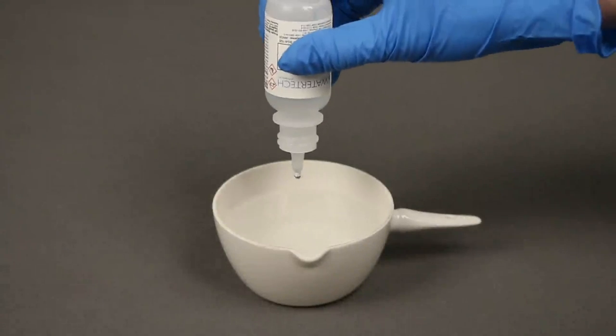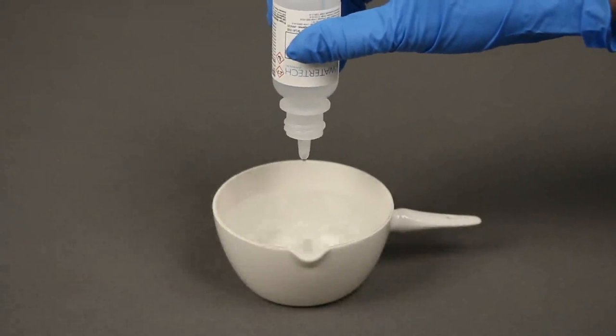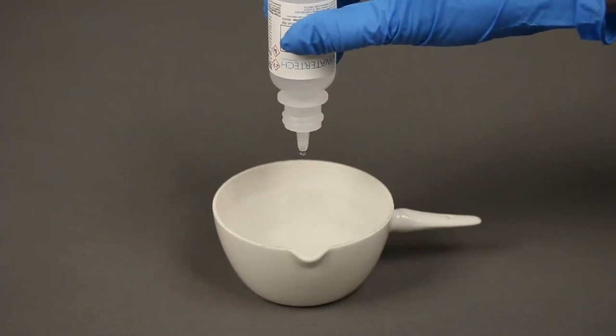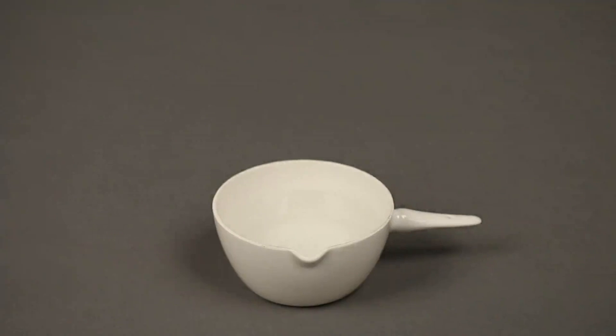Next, add five drops of hardness buffer solution. Hold the bottle vertically for a consistent drop size. Stir to mix.